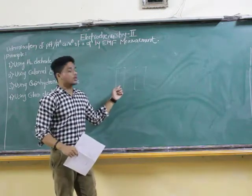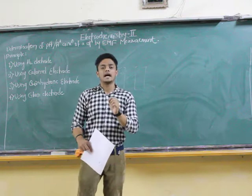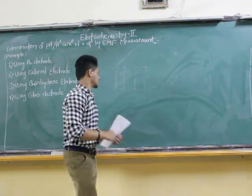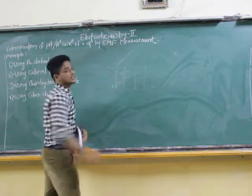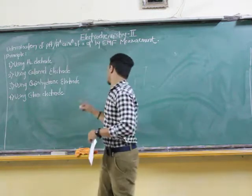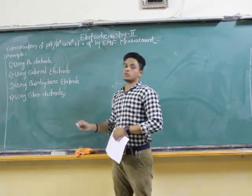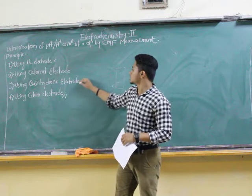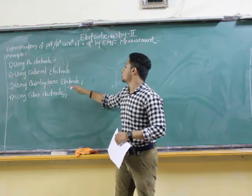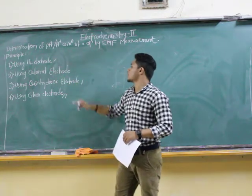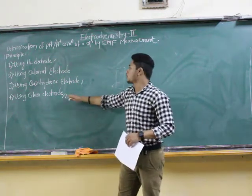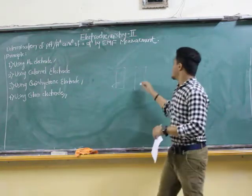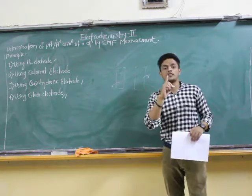Here, one electrode is chosen in such a way that its potential will depend upon the H⁺ ion concentration. For example, the glass electrode. We can choose a glass electrode, or we can choose a hydrogen electrode, or we can choose a quinhydrone electrode. Because all these electrodes — hydrogen electrode, quinhydrone electrode, and glass electrode — their potential depends upon H⁺ ion concentration.